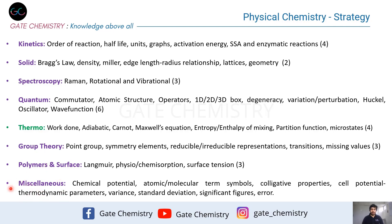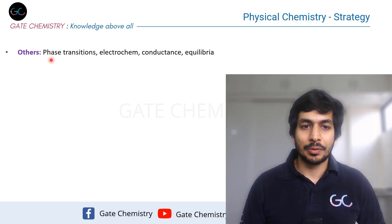Some miscellaneous topics worth covering include chemical potential, which is asked repeatedly; atomic and molecular term symbols, which overlap with inorganic chemistry; and colligative properties — formulas for freezing point depression and osmotic pressure appear periodically. Additionally, basic statistics — variance, standard deviation, significant figures, and error calculation — appear as general aptitude questions within the physical chemistry section.